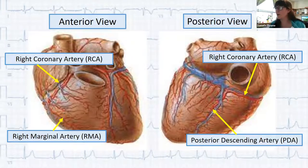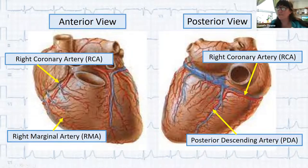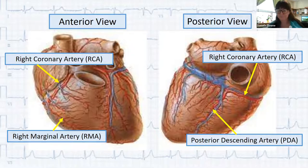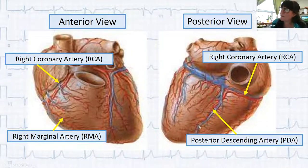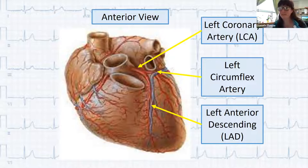Understanding vessel locations matters because when we see abnormalities on the 12-lead, we can identify what vessel might be involved. The right coronary artery originates from the aorta, with the right marginal branch supplying the right atrium and ventricle, and the RCA curves around to the posterior descending artery. Then there's the left coronary artery — the one everybody talks about — giving most blood flow to the left ventricle, the powerhouse of the heart.